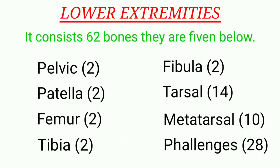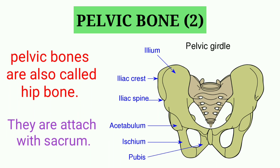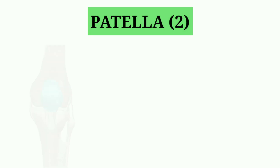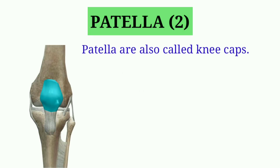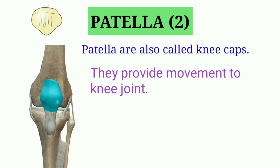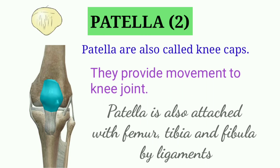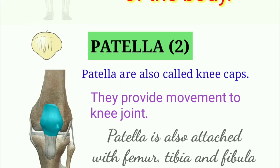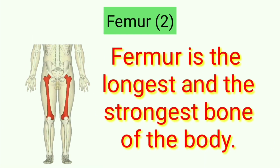Lower extremities consist of 62 bones, which are as follows. Pelvic bone — these are large hip bones with the sacrum and coccyx; these 3 bones form a basin-like pelvic cavity. Patella — these are the kneecaps, located below the thigh bone (femur), and directly attached to the femur and tibia. Femur — these are the thigh bones, which are the largest and strongest bones of the body.